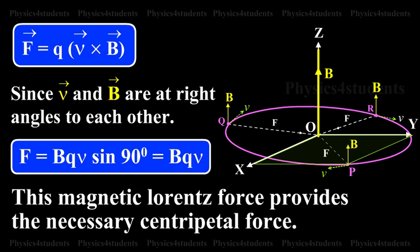Since vector V and vector B are at right angles to each other, this magnetic Lorentz force provides the necessary centripetal force.